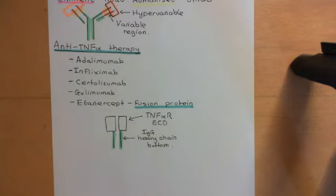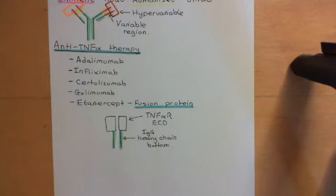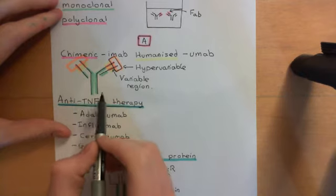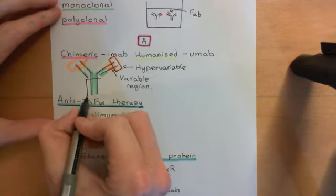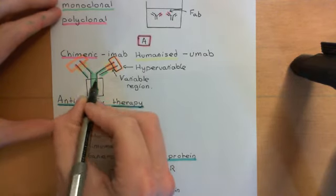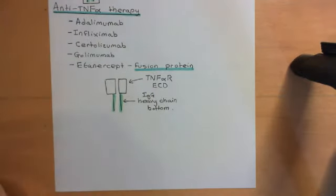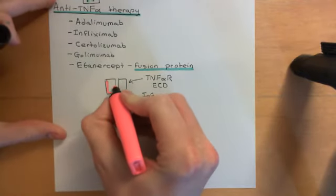One of the drugs that also mops up tumor necrosis factor alpha molecules and neutralizes them, stopping them from actually being able to carry out their function, is etanercept. Etanercept is described as a fusion protein, which means that you have taken two unrelated proteins and bound them together. Basically, we have taken the bottom of the constant region of an IgG molecule — the bottoms of the two heavy chains — and onto the top of those two heavy chains, we have attached the extracellular domain of a tumor necrosis factor alpha receptor.